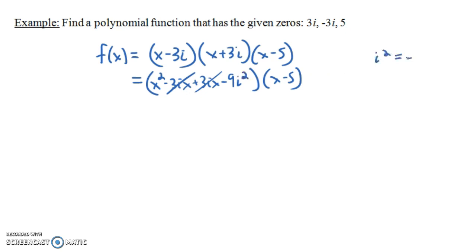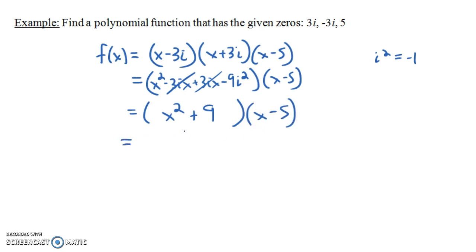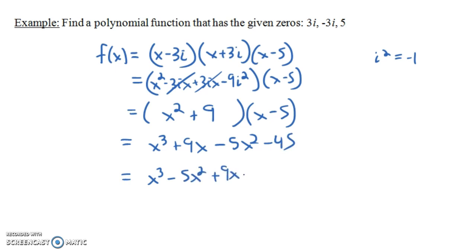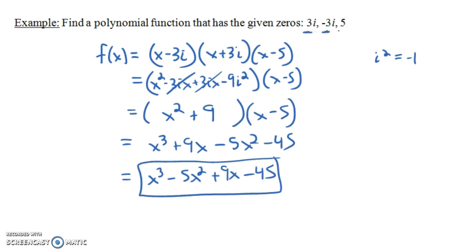Remember, i² = -1, so i is the strange number where squaring it gives -1. So -9i² = +9, meaning (x - 3i)(x + 3i) = x² + 9. Now multiplying by (x - 5): x times each term gives x³ + 9x, and -5 times each term gives -5x² - 45. So our final answer is x³ - 5x² + 9x - 45. You can check that all three numbers are zeros of this polynomial.